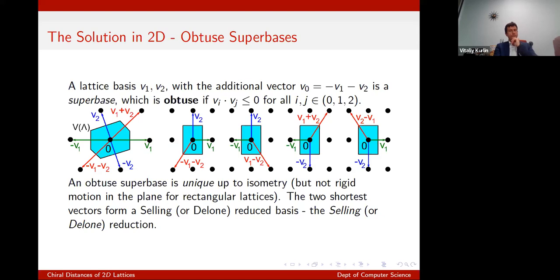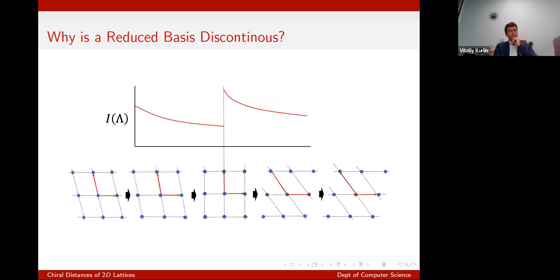It turns out this is unique up to isometry, but unfortunately not quite up to rigid motion. So for rectangular lattices stuck in the plane there are several possible choices of an obtuse superbase. In general, up to this consideration, this is a genuinely unique choice, and it's also continuous.